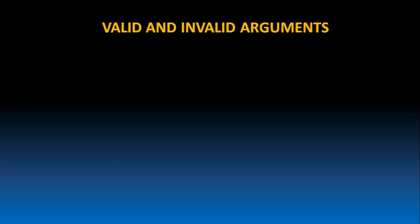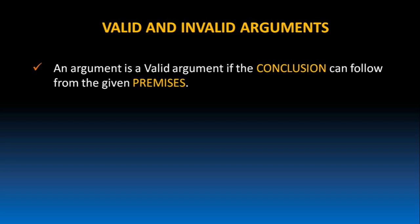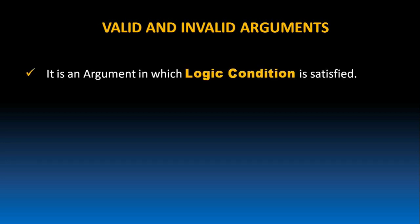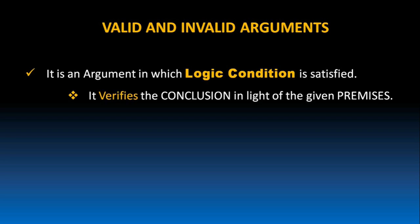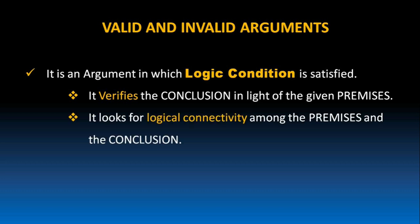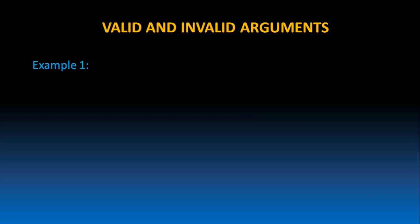Hello everyone! In this lesson, we'll be discussing valid and invalid arguments. What is a valid argument? An argument is valid if the conclusion can follow from the given premises. It is an argument in which the logic condition is satisfied. Valid arguments verify the conclusion in light of the given premises and look for logical connectivity among the premises and the conclusion. Let us take a few examples to understand valid and invalid arguments.